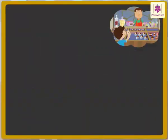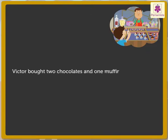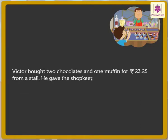Victor bought two chocolates and one muffin for 23 rupees 25 paise from a stall. He gave the shopkeeper a 50 rupee note. How many rupees did he get back?